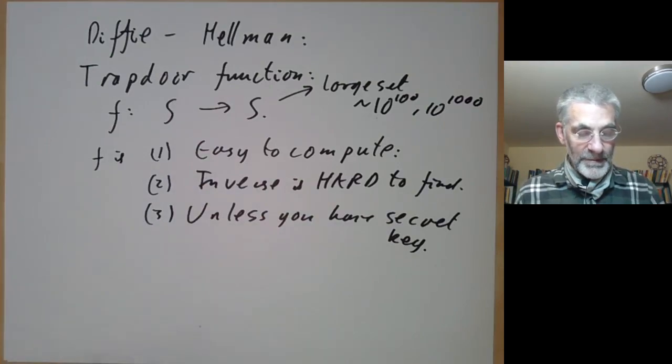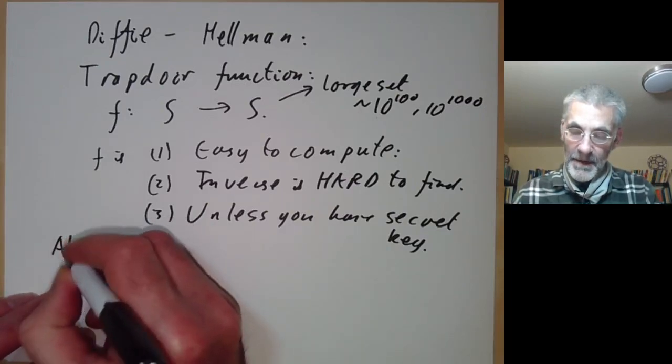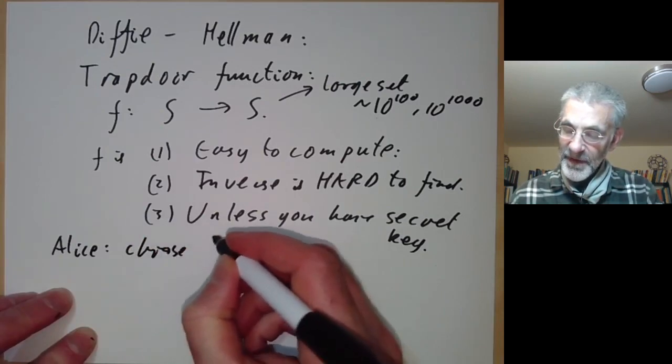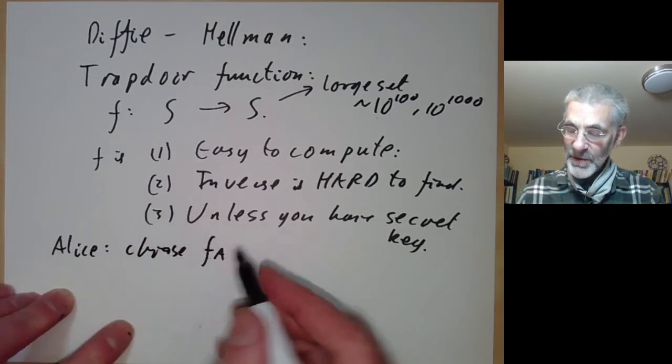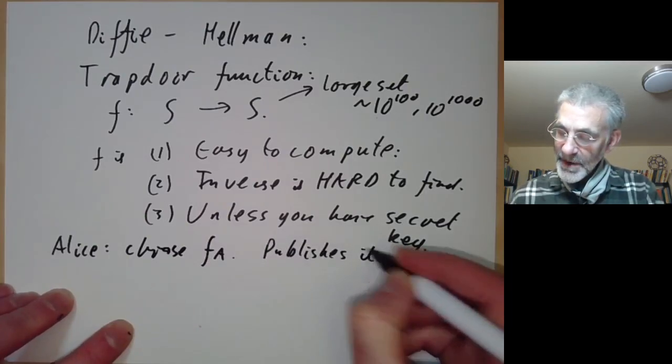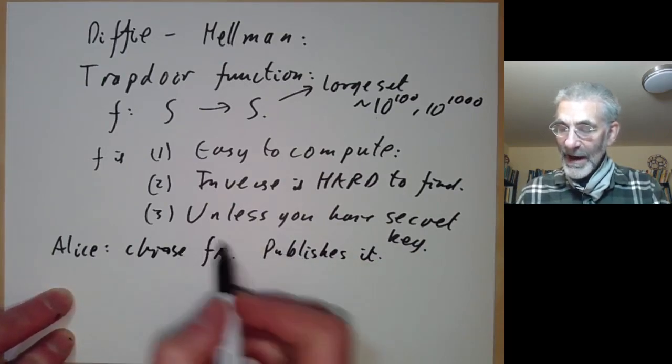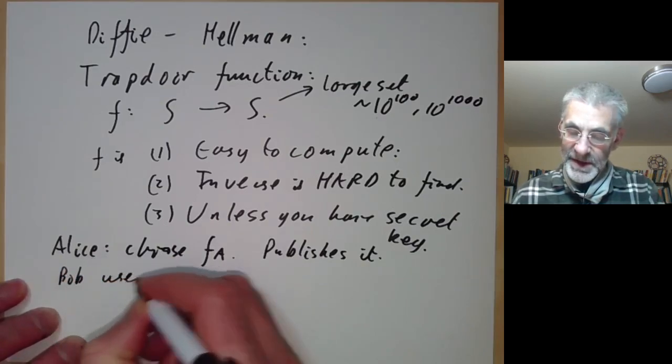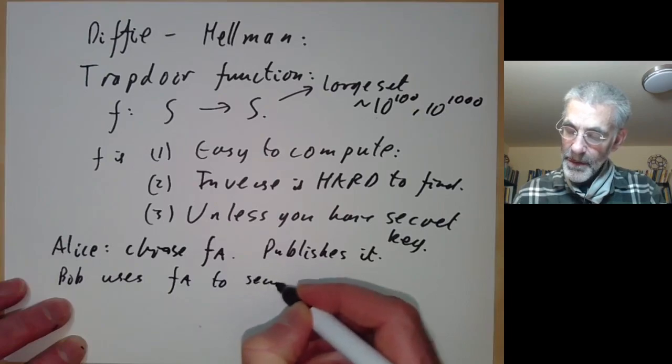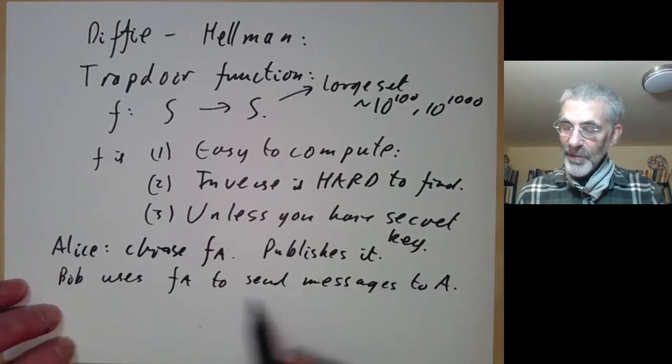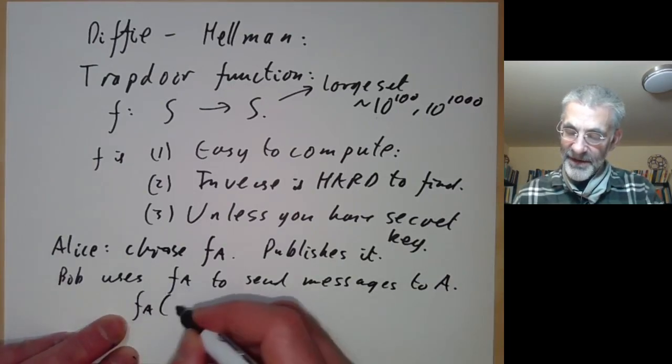Alice and Bob can communicate as follows: Alice chooses some trapdoor function f_A, Alice's trapdoor function, and publishes it. So both Eve and Bob know Alice's trapdoor function. Bob uses f_A to send messages to Alice.